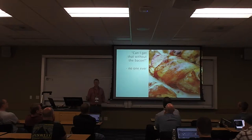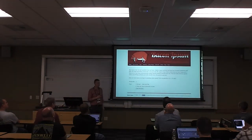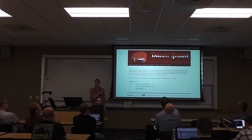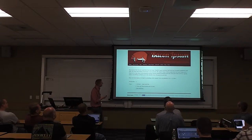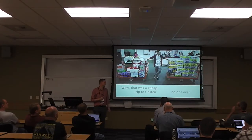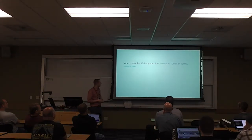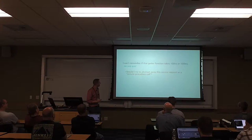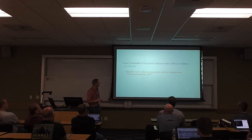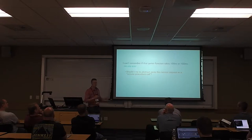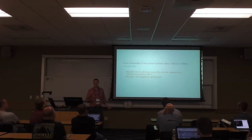I'll walk through a couple of sample statements to help us identify the true fundamental challenges. The first one: 'Can I get that without the bacon?' No one ever says that — when I do UI mockups, I use this bacon ipsum generator. It's a real website called Bacon Ipsum dot com. Another challenge: 'I can't remember if that getter function takes 100 nanoseconds or 100 milliseconds.' We've got this service request that says get user and suddenly it's taking 100 milliseconds. Do we really want to abstract away this magical service request as a simple remote procedure call? It's six orders of magnitude difference.